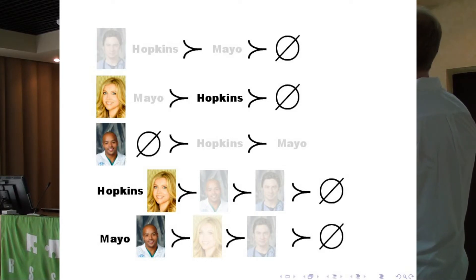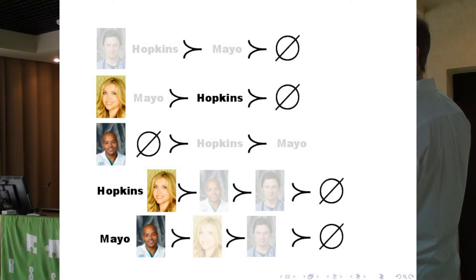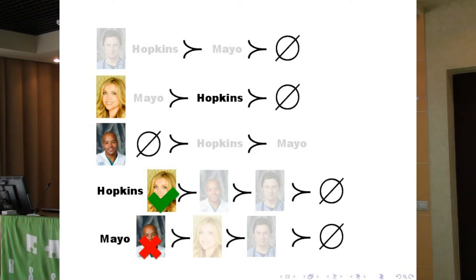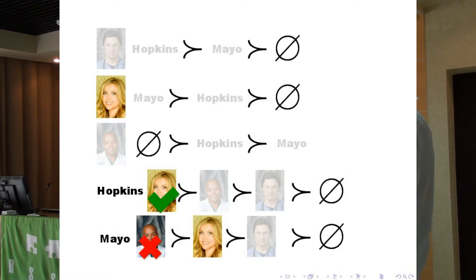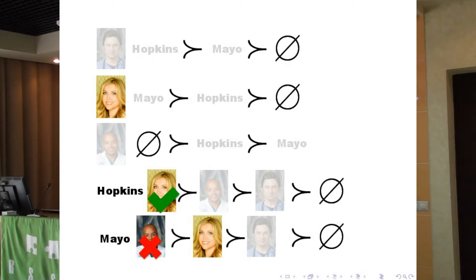Elliot prefers working at Hopkins to not working at all, whereas Turk doesn't want to work. So Elliot accepts the offer from Hopkins - but remember, it's going to be deferred, just a temporary acceptance. Mayo hasn't actually filled a slot, so they still have an empty slot and move down their list. Since Turk doesn't want to work, Mayo sends an offer to Elliot. Now Elliot has just received an offer from a hospital she actually prefers - which is Mayo. This is why it was important to have deferred acceptance: at first she only had an offer from Hopkins, but now she's got a better offer from Mayo.